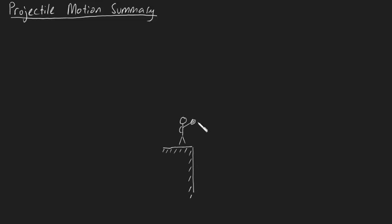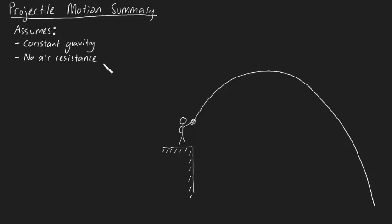Imagine throwing a baseball into the air. You'll notice that the path it swoops out is parabolic. This is because the baseball undergoes projectile motion, which assumes constant gravity and no air resistance during its flight.